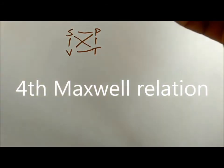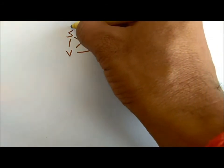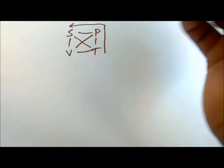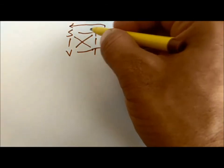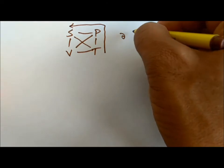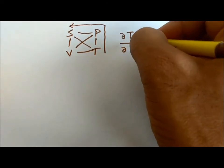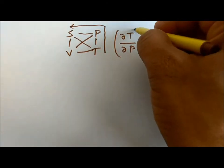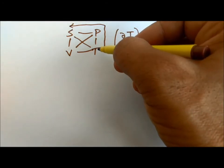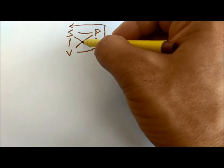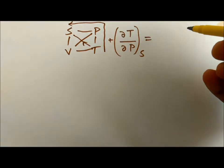For the fourth relation, we start from T. We go from T to S. When we go from T to S it is del T over del P at constant S. When we go from T to S the arrow goes up, so it is with a plus sign.